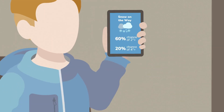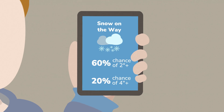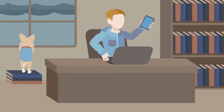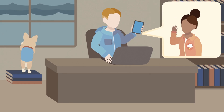What's this? My weather forecast is different. It shows different predictions for snowfall alongside a percent chance for each one. I just want to know what the forecast is.